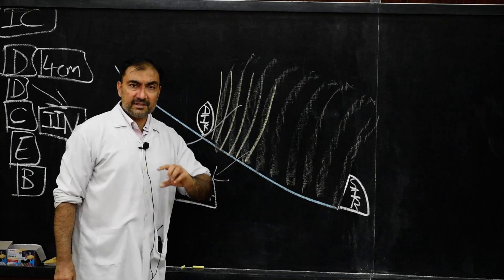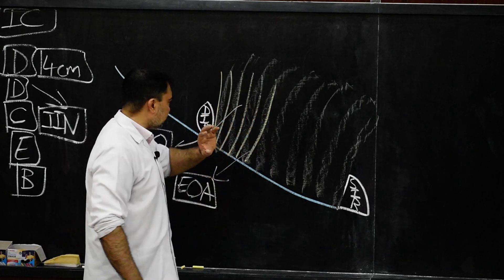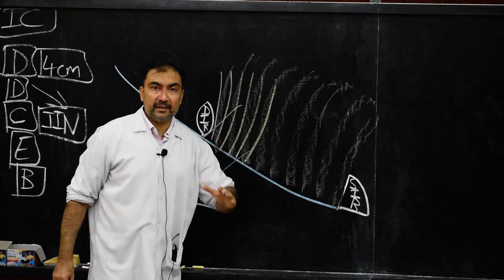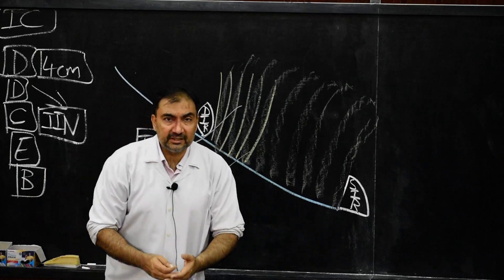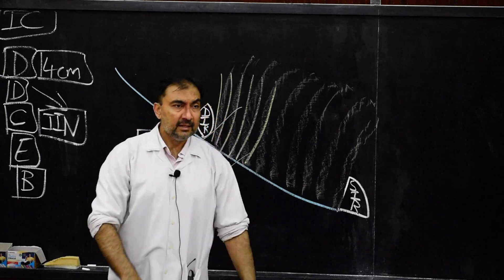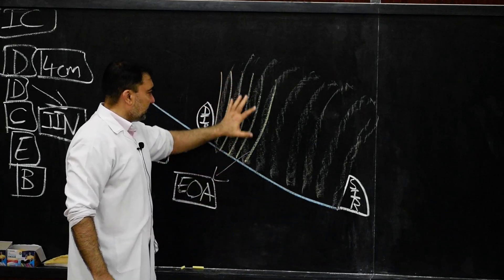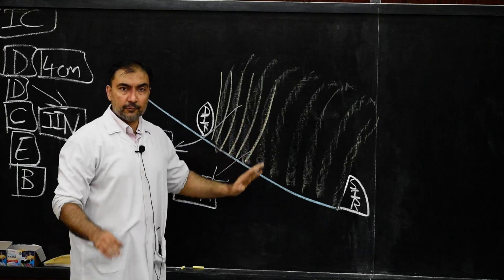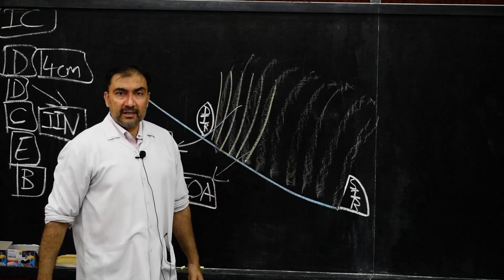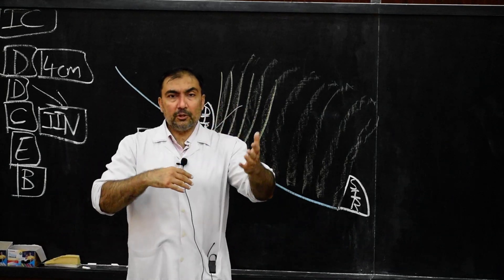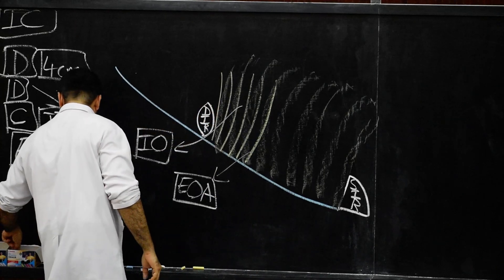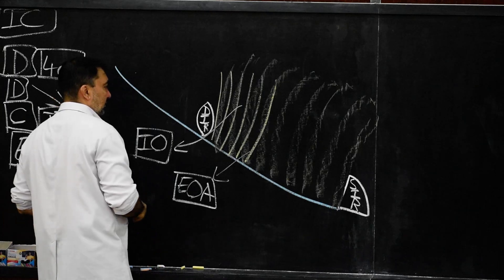The anterior wall of the inguinal canal — which is 4 centimeters, directed downwards, forwards, medially, extending between the deep inguinal and superficial inguinal rings, present above the medial half of the inguinal ligament — is formed by skin, superficial fascia, external oblique aponeurosis, and in the lateral one-third by internal oblique muscle. Now, the posterior wall of the inguinal canal is formed by fascia transversalis.